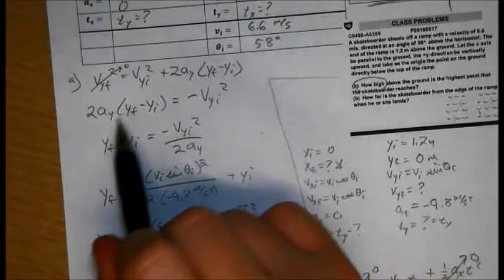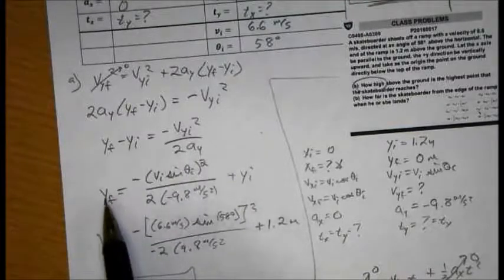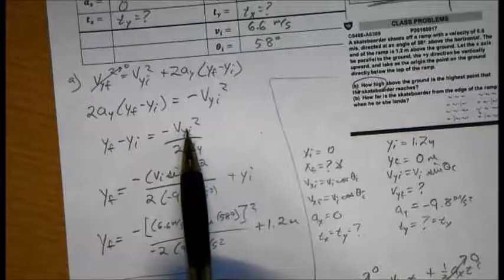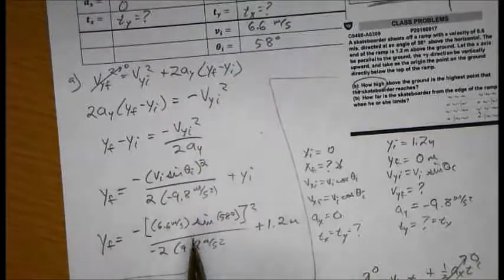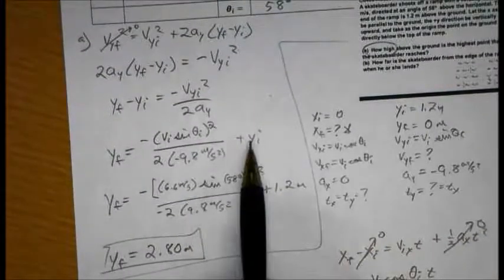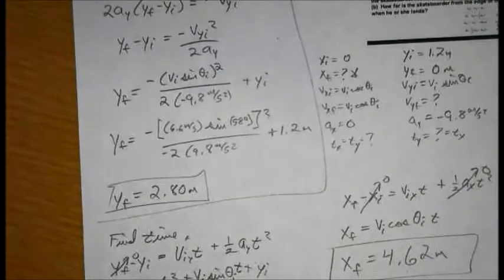So we solve through, just do some basic algebra and solve for yf. Now at some point we have to plug in for vi initial, vi sine theta initial and square that whole quantity. And plug in for the acceleration and add the y initial here, 1.2 meters and end up with 2.8 meters.